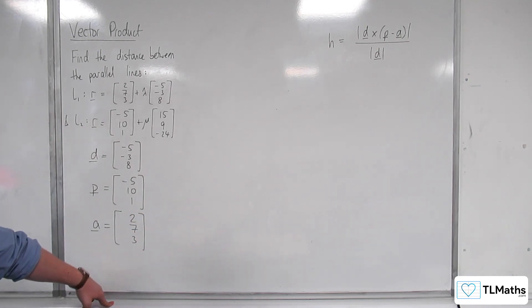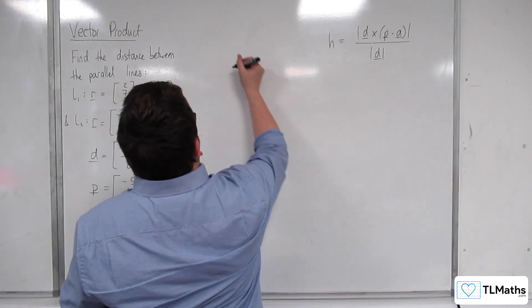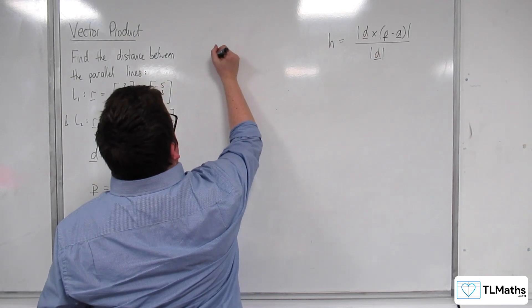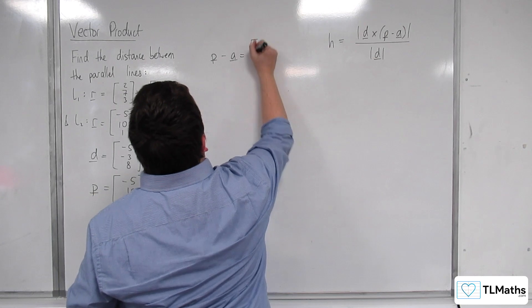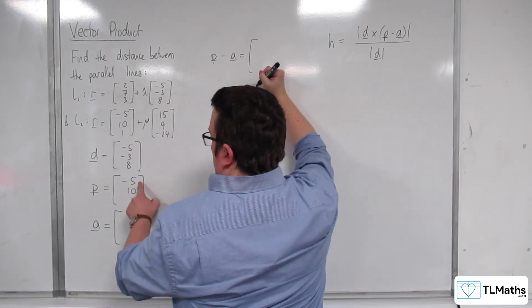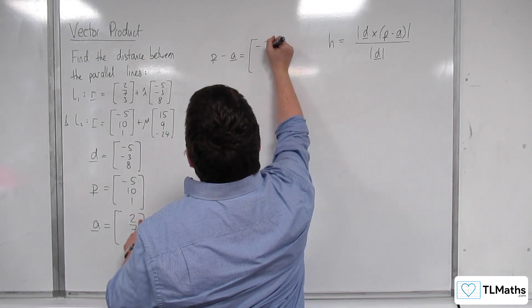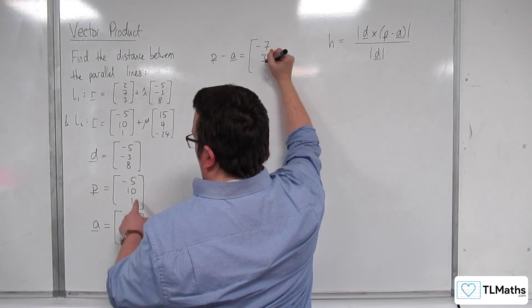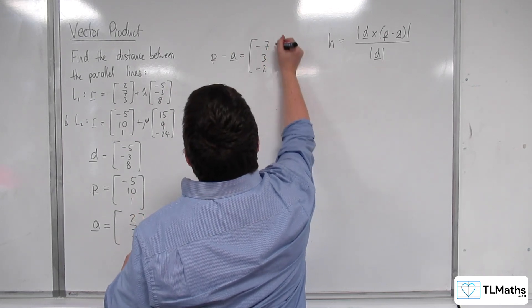Right, so using that, we can work out P take away A. So minus 5 take away 2 is minus 7, 10 take away 7 is 3, and 1 take away 3 is minus 2.